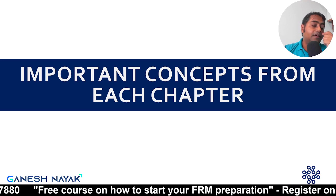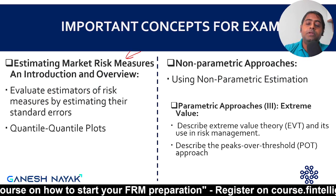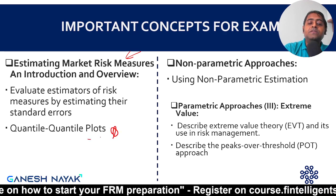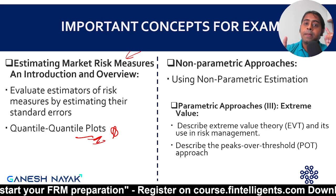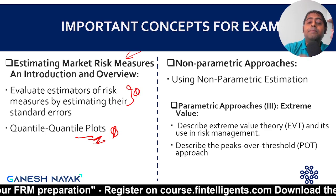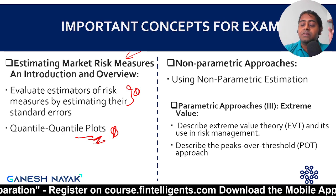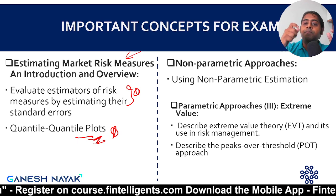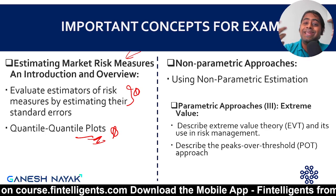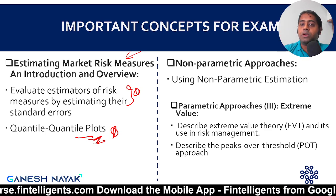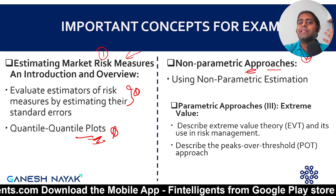For the first chapter — estimating market risk measures — the quantile-quantile plot is very important; you can expect a diagram or theory-related question. There is also one proper sum explaining how to create a confidence interval when you calculate VAR and pick a quantile. These two topics are the key focus. For the non-parametric chapter, there are different methods — the bootstrap method and correlation-driven methods — all of which need to be remembered in terms of their basics.